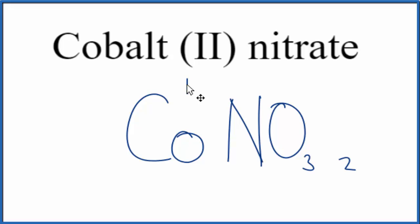We do need to put parentheses around the nitrate ion to show the two applies to the whole thing. We'll put our parentheses here, and this is the formula for cobalt (II) nitrate: Co(NO3)2.